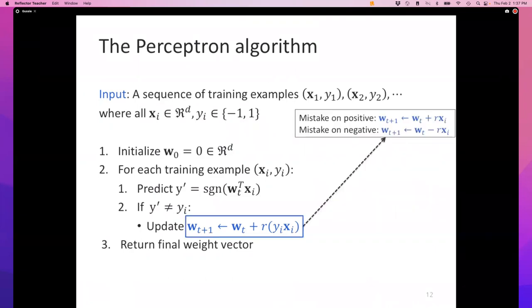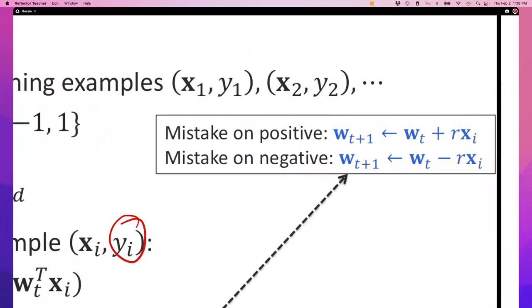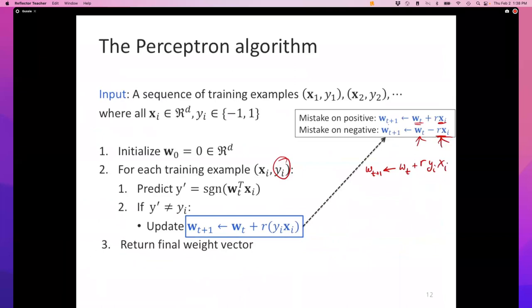Let's unfold this perceptron update. If the true label y_i is positive, meaning the example is positive, then you're adding the current example to the current weights with scale r. If the true label is negative, so w_{t+1} = w_t + r y_i x_i - if y_i is negative, you're subtracting from the current weights, subtracting r times x_i. So you're adding positive examples and removing negative examples. That's the entire update.